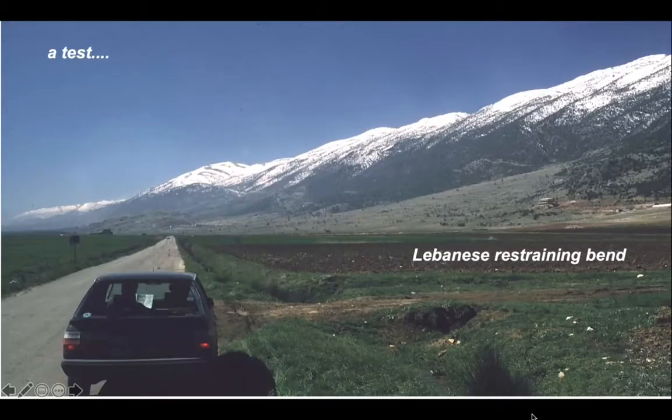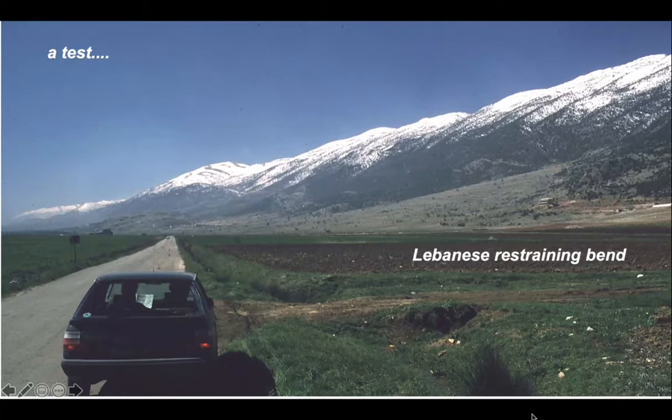Let's do that and go to Lebanon where the Dead Sea Fault system forms a restraining bend. Here we are in the Beqaa Valley. The fold structure we're going to analyze is represented in the landscape by the ridge that's got snow on it in the distance, and the fault runs close to the flank of this structure.